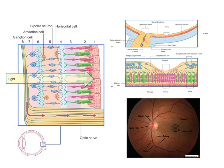The photoreceptor cells interact with a sensory neuron called bipolar neurons, which collect information from a small number of photoreceptor cells. So there's an element of convergence going on: a small number of photoreceptors converge onto a single bipolar neuron. The bipolar neurons in turn interact with the ganglion cells — the retinal ganglion cells — and it's the axons of the retinal ganglion cells which form the optic nerve itself.